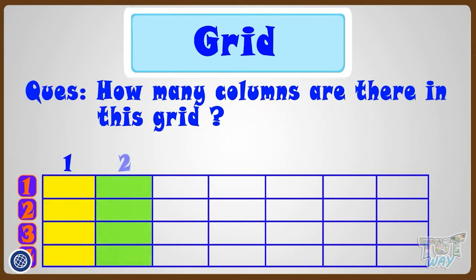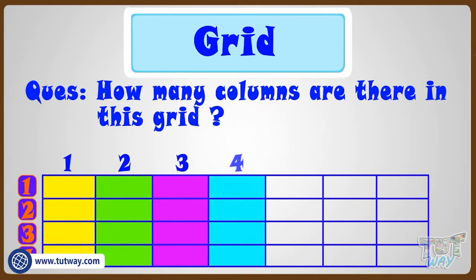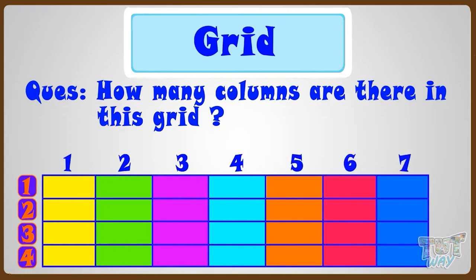One, two, three, four, five, six, seven. So seven columns are there in this grid.